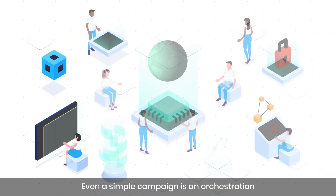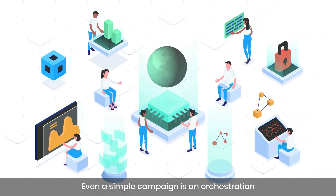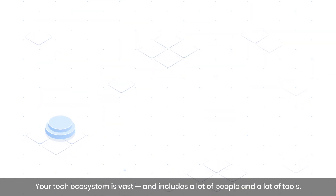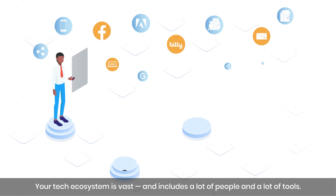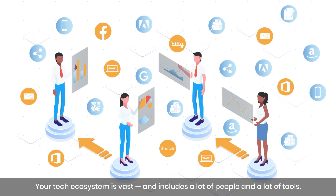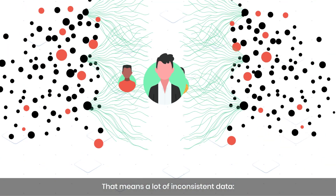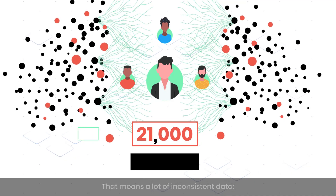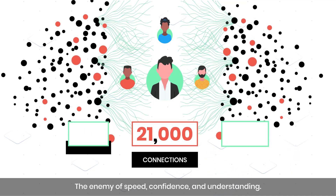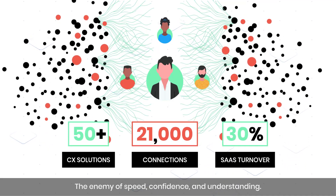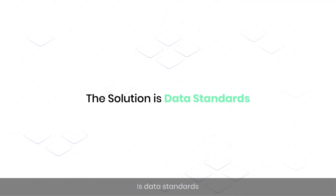Even a simple campaign is an orchestration. Your tech ecosystem is vast and includes a lot of people and a lot of tools — that means a lot of inconsistent data, the enemy of speed, confidence, and understanding.